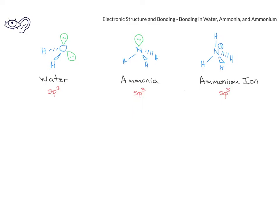Furthermore, because each of these molecules or ions is sp3 hybridized, we also know that each central atom is going to have a tetrahedral electron domain geometry. When we look at water specifically, we need to pay attention to the fact that the oxygen-hydrogen bond is going to be very polar. This is because the oxygen atom is the second most electronegative atom, and the hydrogen is not nearly as electronegative. So the electron density is pulled much more greatly to the oxygen, leading to a partial negative charge on the oxygen side of the molecule, and a partial positive charge on the hydrogen side of the molecule.